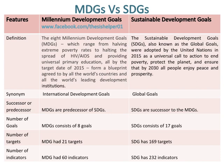MDGs are the predecessor of SDGs, whereas SDGs are the successor to the MDGs. MDGs consist of 8 goals, whereas SDGs consist of 17 goals. MDGs had 20 targets, whereas SDGs have 169 targets. MDGs had 60 indicators, whereas SDGs have 232 indicators.